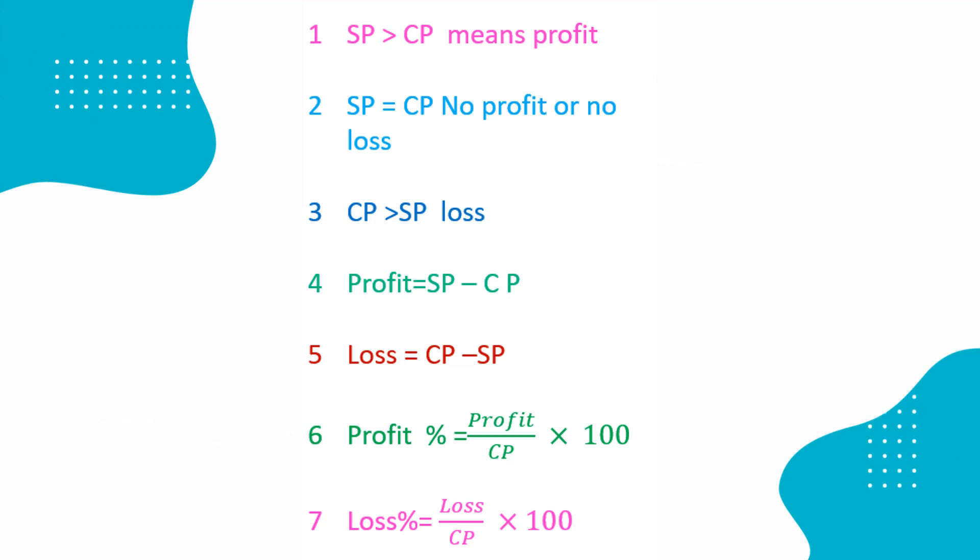Depending on CP and SP of an article, we have profit and loss. SP greater than CP means profit. SP equal to CP, no profit or no loss. CP greater than SP, loss.